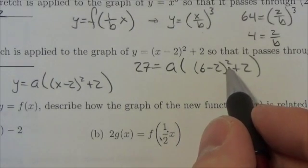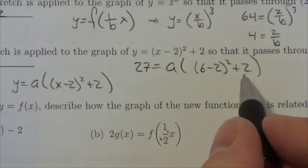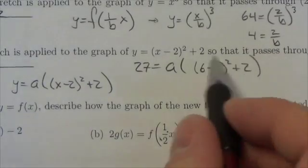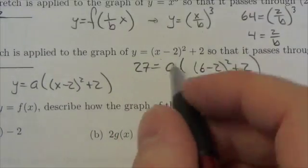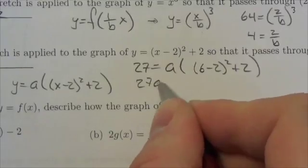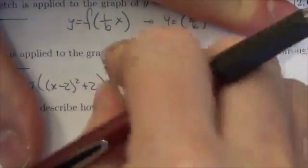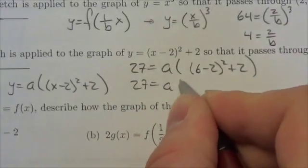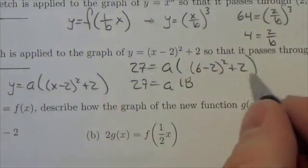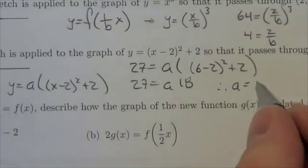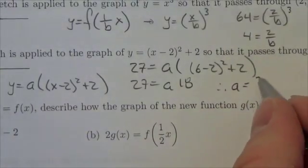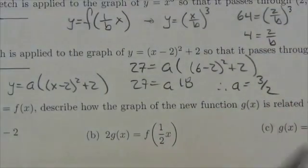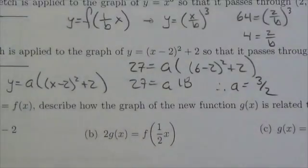27 = a × 18, and when I divide I get that my stretch factor, when I cancel the 9 out of both of those, is going to be 3/2. That was the vertical stretch factor in this question.